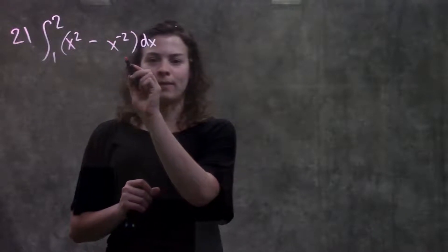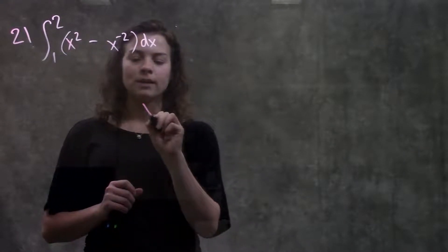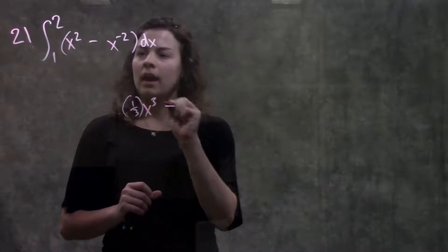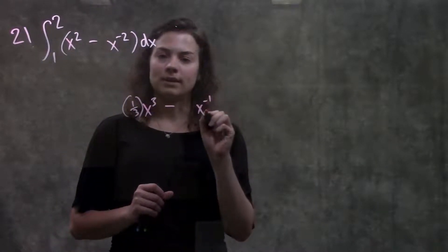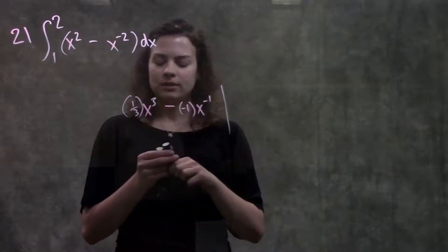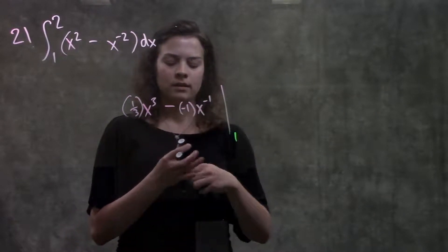So first we take the integral of this. Take the integral of x squared, I add 1 to the exponent, and then divide by that number. And then same thing over here, add 1 to the exponent, and then divide by that number. And the integral is from 1 to 2.